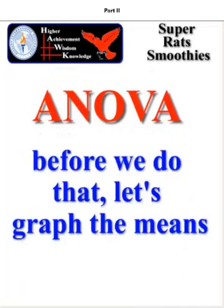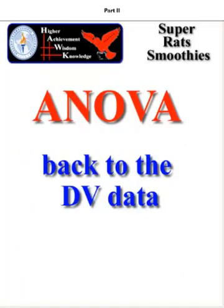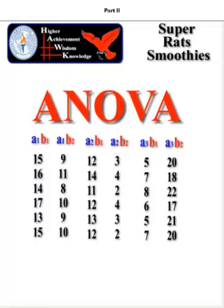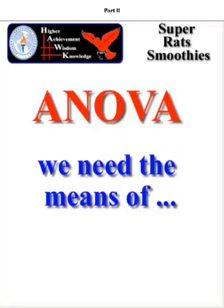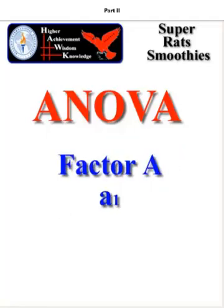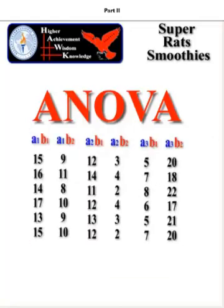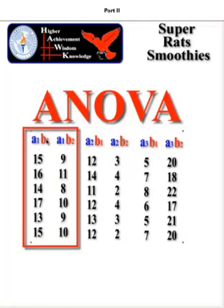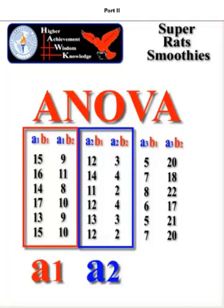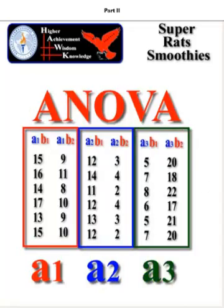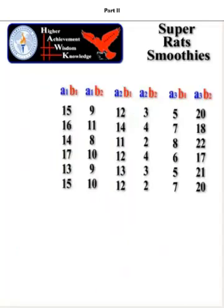Before we do that, I want to graph the means of each of the little subgroups. Let's go back to our data about the push-ups. We need the means of factor A at all three levels — level 1, level 2, level 3. There's A1 small smoothie, A1 large smoothie. Then the same for A2 — that's the 10 milligrams, small and large. And the last one is 20 milligrams, small and large. So let's figure out what the means are of each of these little columns.